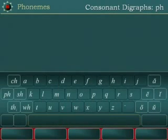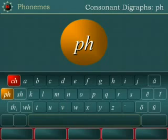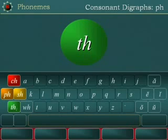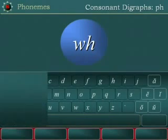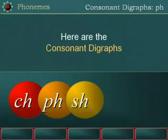Consonant digraphs: Ch, ch, ch as in cheetah, Ph as in dolphin, Sh as in shark, Th as in moth, Wh as in whale. Here are the consonant digraphs. Ch, ch, Ch, ch, Ch.